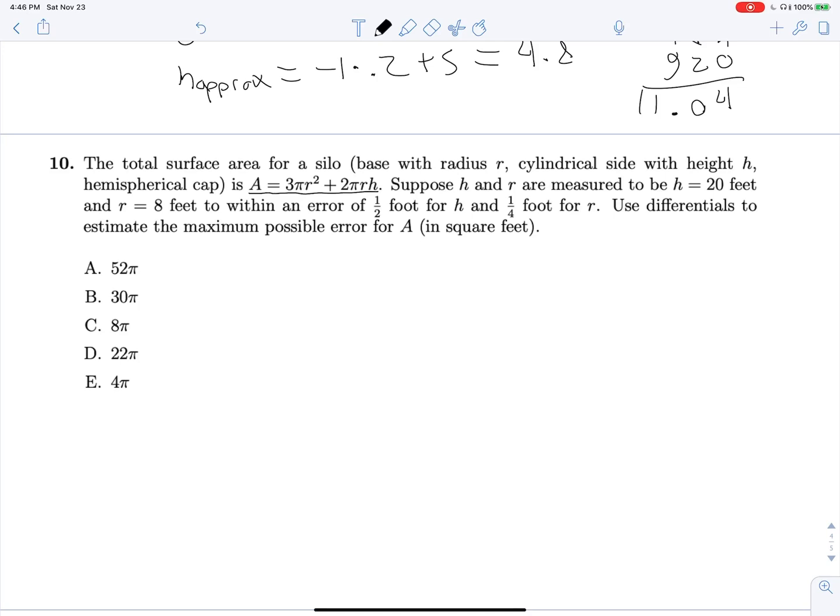So, we need our partial derivatives with respect to R and with respect to H. So A_R is going to be 6πR + 2πH. And A_H is going to be 2πR. And we can find what these values are with their measured equivalents. So H is 20, R is 8. With that in mind, 6πR is going to be 48π plus 2πH is going to be plus 40π, which is going to give us 88π. And A_H is going to work out to 16π.